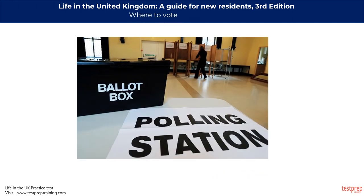People vote at polling stations, or polling places in Scotland. Before the election you will be sent a poll card telling you where your polling station is and when the election takes place. On election day, polling stations are open from 7am until 10pm. When you arrive, staff will ask for your name and address; in Northern Ireland you must also show photographic identification. You will receive a ballot paper to fill in privately in a polling booth. You should make up your own mind who to vote for — no one has the right to make you vote for a particular candidate. If it is difficult to get to a polling station, you can register for a postal ballot, where your ballot paper is sent to your home before the election.